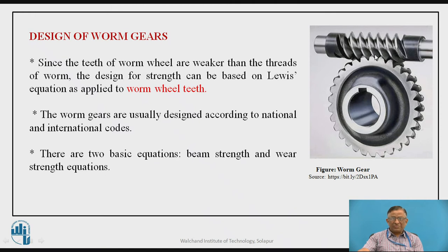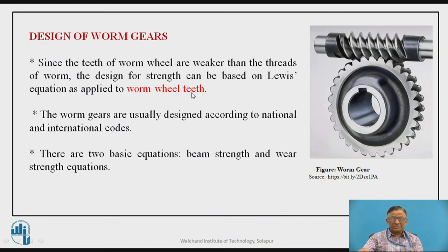That is why the design of the worm gear drive is based upon the beam strength and wear strength of the worm wheel, because the corresponding beam strength and wear strength of the worm is always greater than the worm wheel. The worm has a continuous thread which transmits the power. So design for strength using Lewis's equation is applied to worm wheel teeth, not the worm. The worm wheel teeth are always designed as the weaker element.